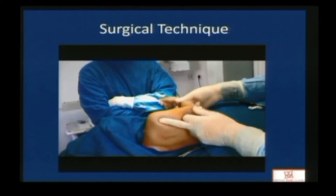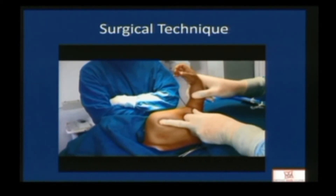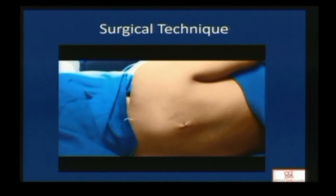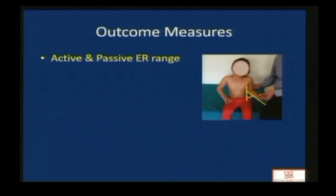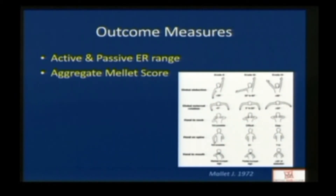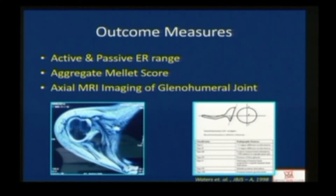Passive external rotation is achieved in most cases. This is followed by a conventional axillary approach for the conjoint tendon transfer. Single-day hospitalization, shoulder spica is applied for five weeks, and regular physiotherapy for one year post-op. Outcome measures used include active and passive external rotation range. Global shoulder function is measured with the aggregate Mallet score, and axial MRI imaging of the glenohumeral joint was obtained before and after surgery.